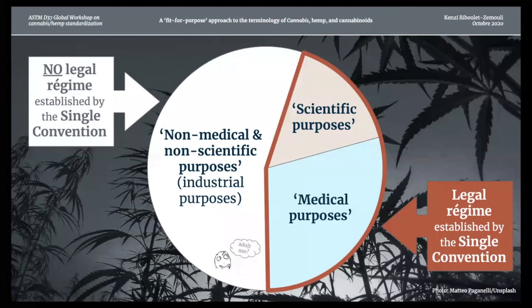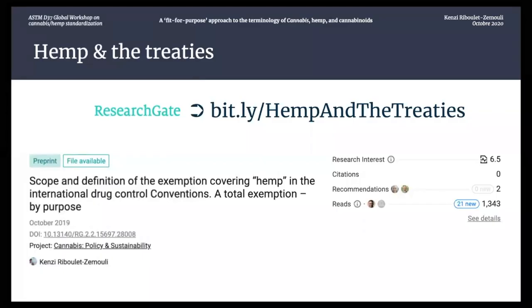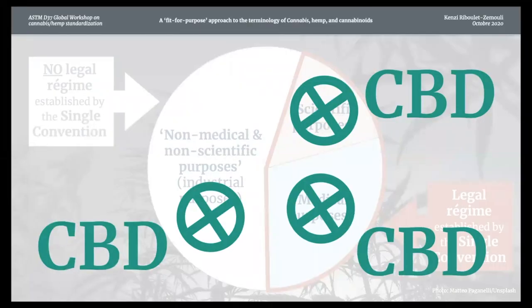The conventions provide a different framework for other purposes, called industrial purposes, defined as non-medical and non-scientific. If the purpose is not medical or scientific, it is exempt from the controls of the convention. Therefore we have an international treaty framework that establishes a two-tiered regime: comprehensively controlling any activity relating to cannabis when undertaken for medical or scientific purposes, and not controlling anything related to cannabis when not relating to those purposes.